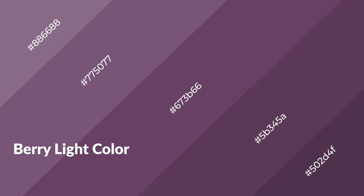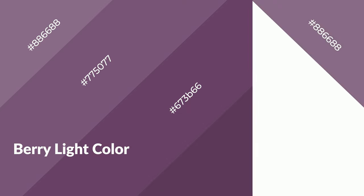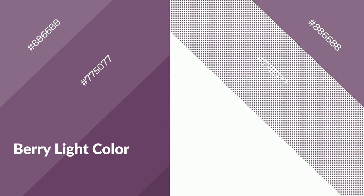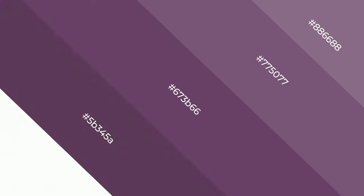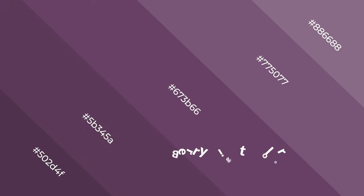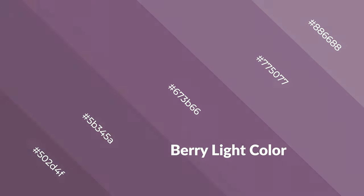Berry light is a warm color and it emits cozier and active emotions. Warm colors are symbols of warmth, fire, heat, and sunshine. It also evokes joy, passion, love, and even anger emotions. You can see them used in restaurants and gyms.